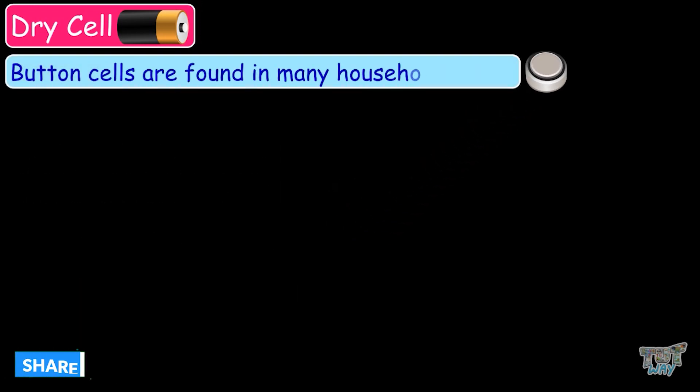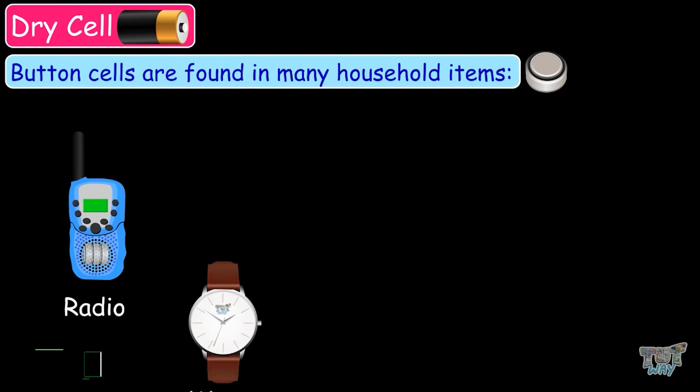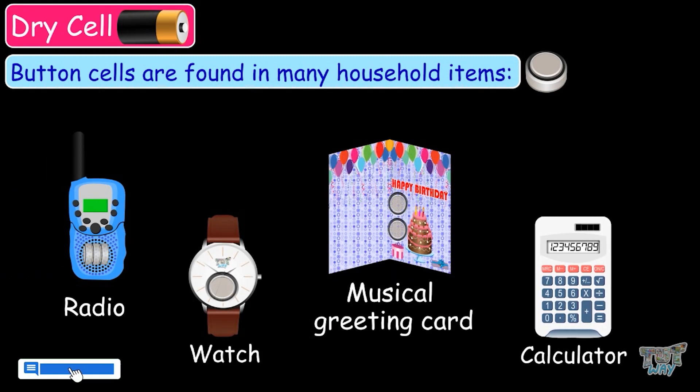Button cells are found in many household items, like radios, watches, musical greeting cards, calculators, and many other small electronic devices.